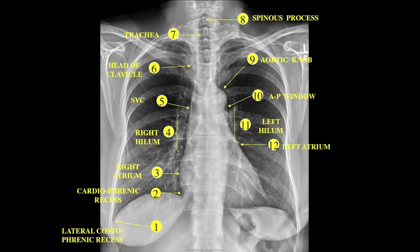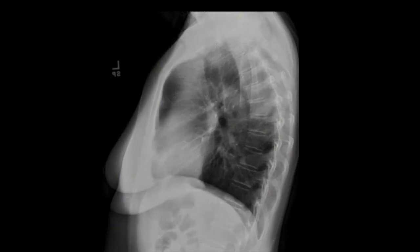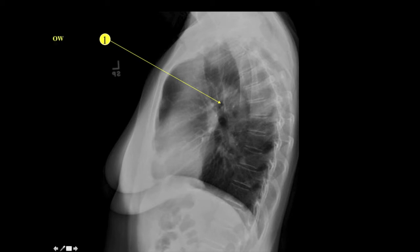The left atrial border, the left ventricular border, the descending aorta — a very important landmark on the PA radiograph — lets us evaluate for any disease process involving the left lung base. The gastric bubble is also visible. The lateral view is slightly more challenging, and we will revisit again the anatomical structures on the lateral radiograph.